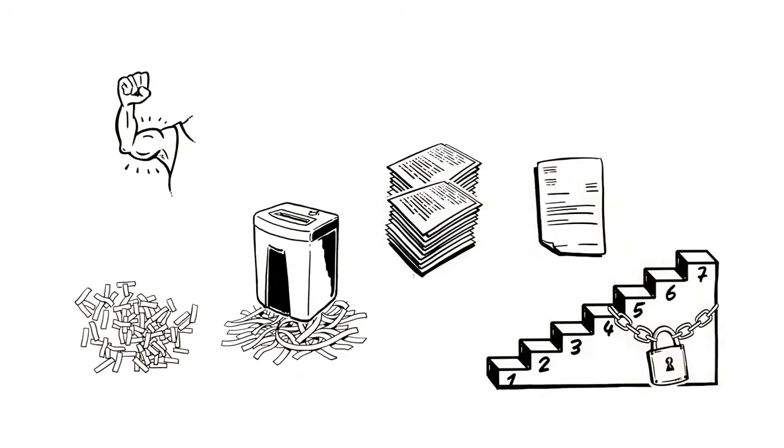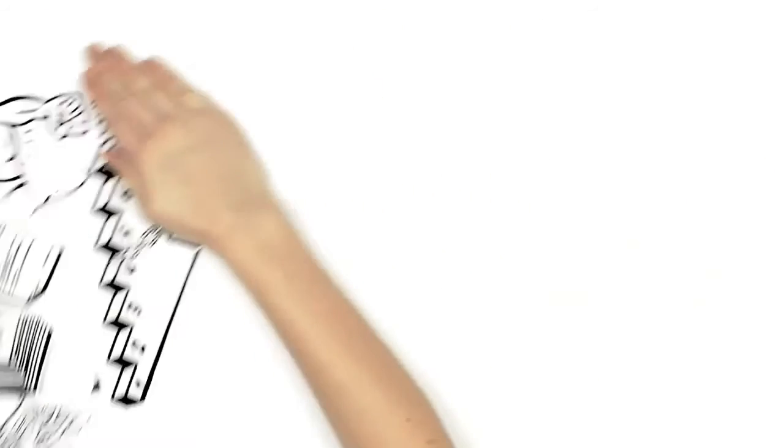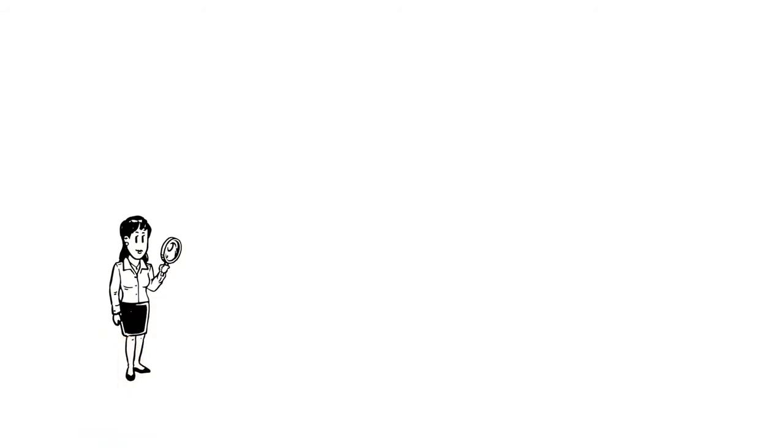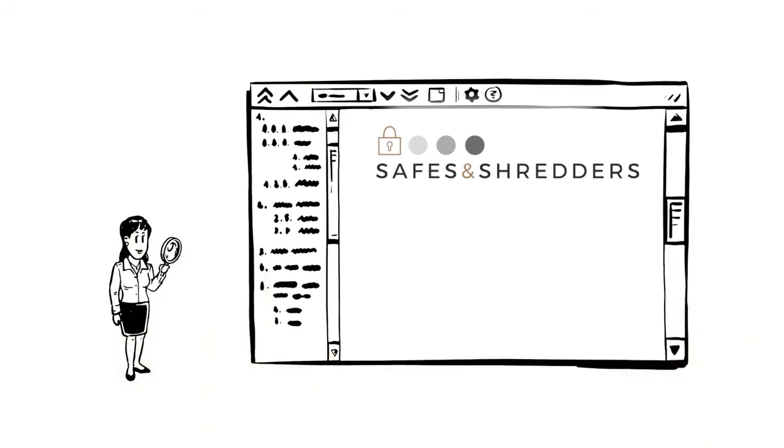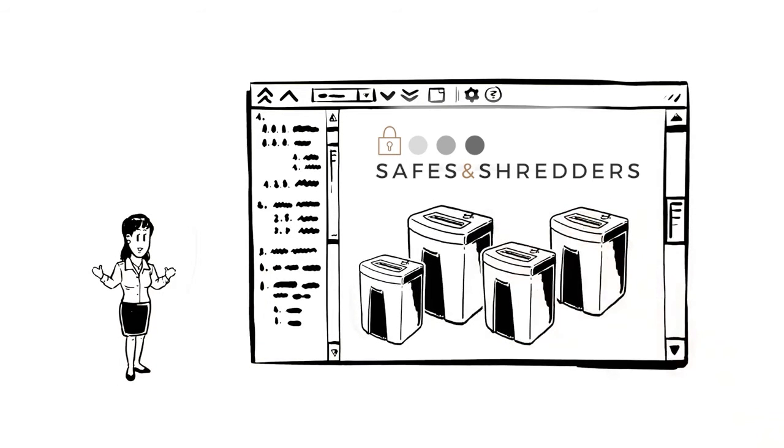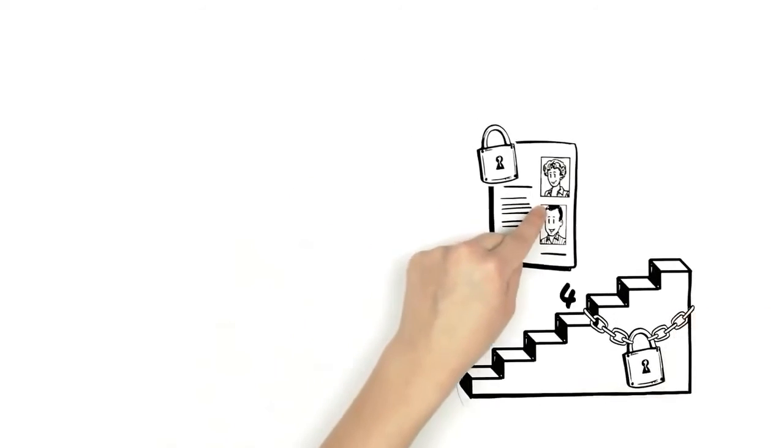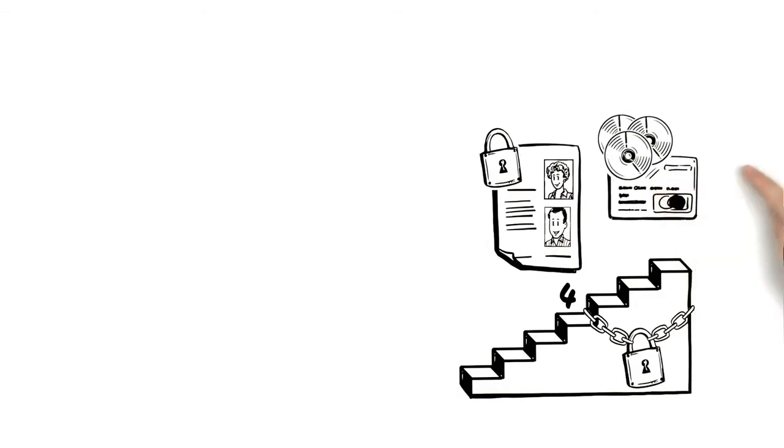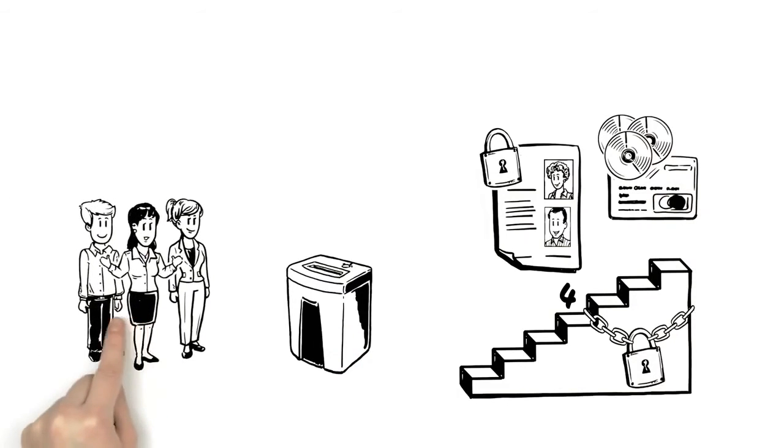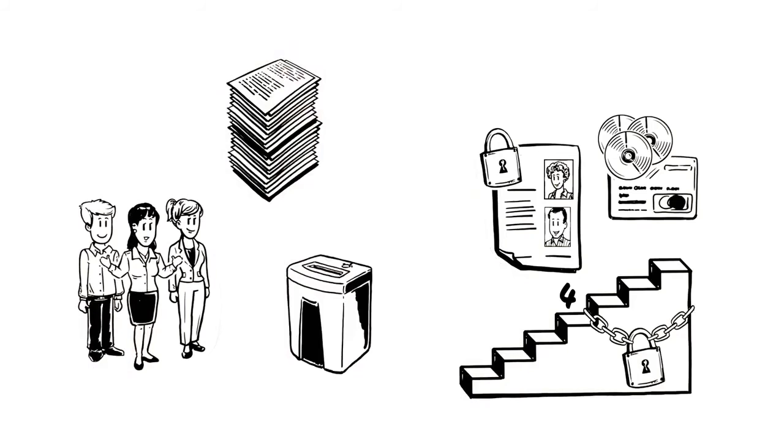Barbara is curious and pays the safes and shredders website a visit. She's astounded at how many different document shredders there are. For paper containing sensitive information, Barbara decides on security level P4. She also needs to shred CDs and credit cards, and since her document shredder will also be used by her employees who process a huge number of documents, she needs a device with a large container volume.